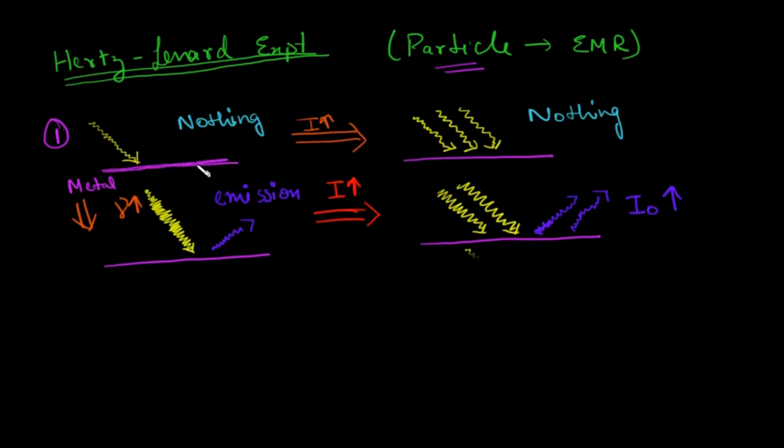What was done was a metal surface was considered and that was irradiated with some frequency of light, some radiation was sent and our observation was that nothing happened. This is first step, a metal was taken, we sent frequency on it and observed nothing happened.